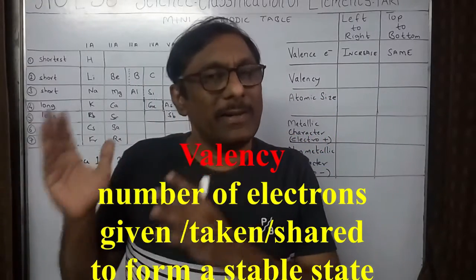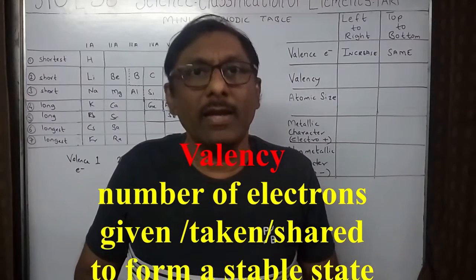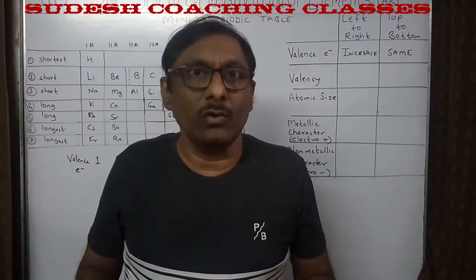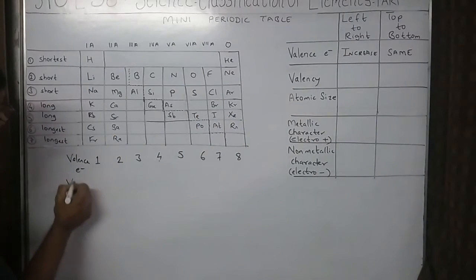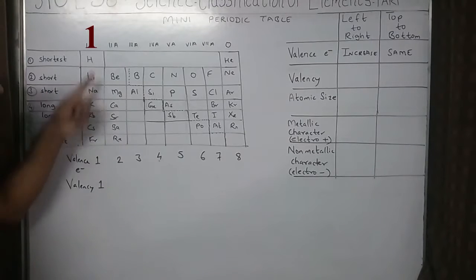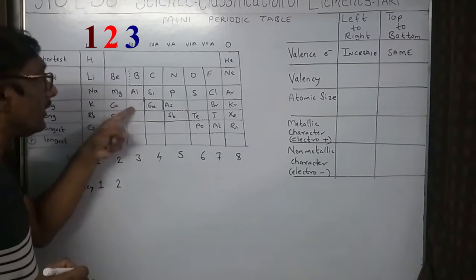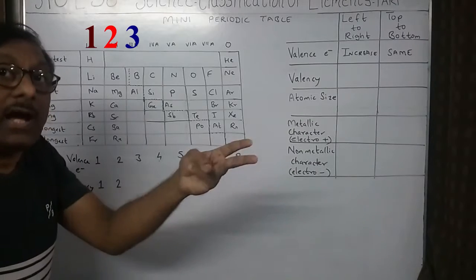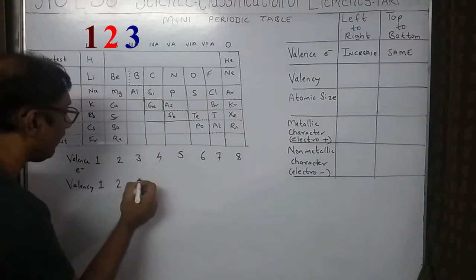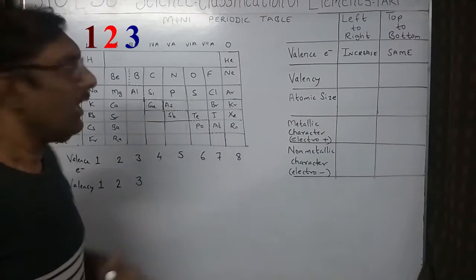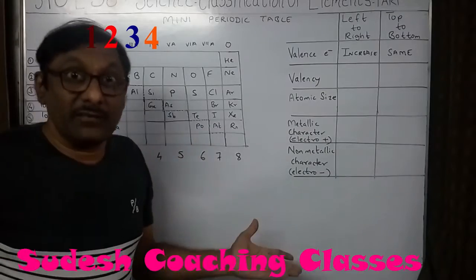Now what is valency? The number of electrons given, taken, or shared is called the valence of that element. If you have one electron in the outermost orbit, you need seven more to complete the shell — so it is easier to give one rather than take seven. Hence the valency of group 1 is one. Group 2 has two electrons — easier to give two than take six, so valency is two. Group 3 gives three electrons more easily than taking five, so valency is three.